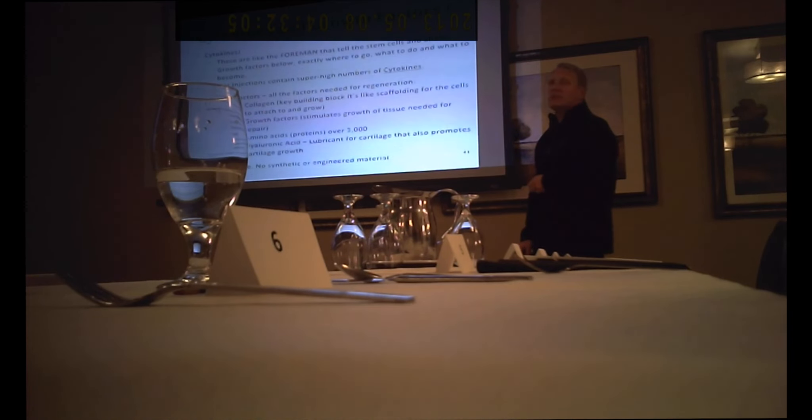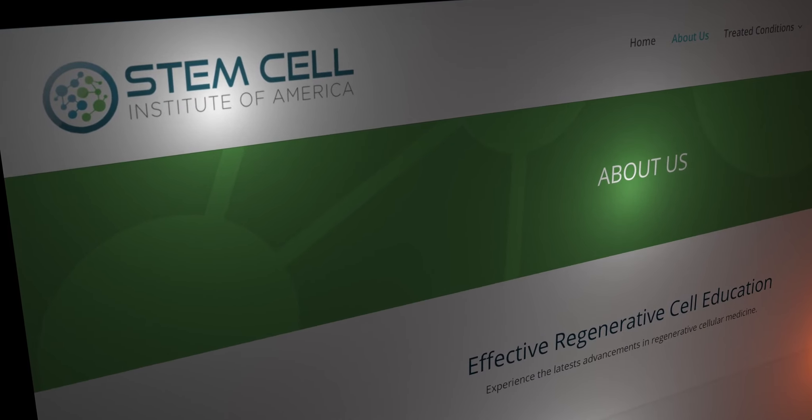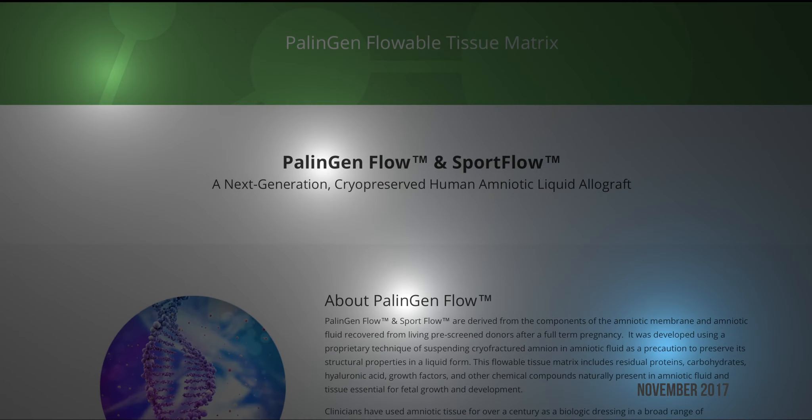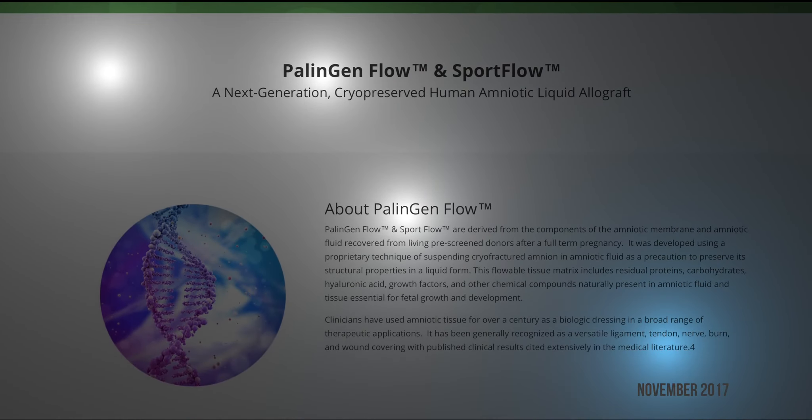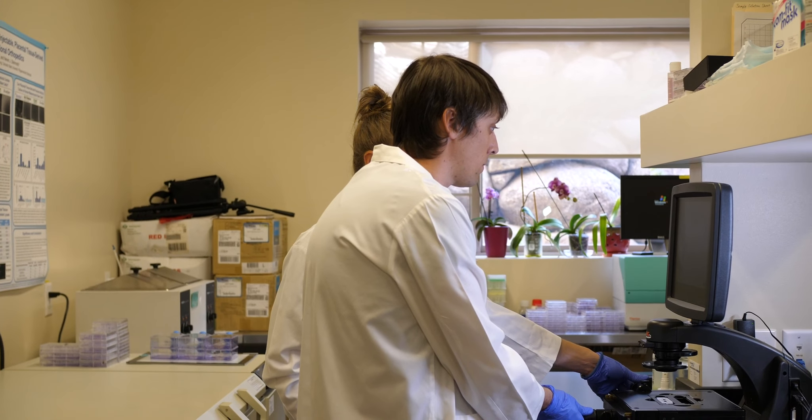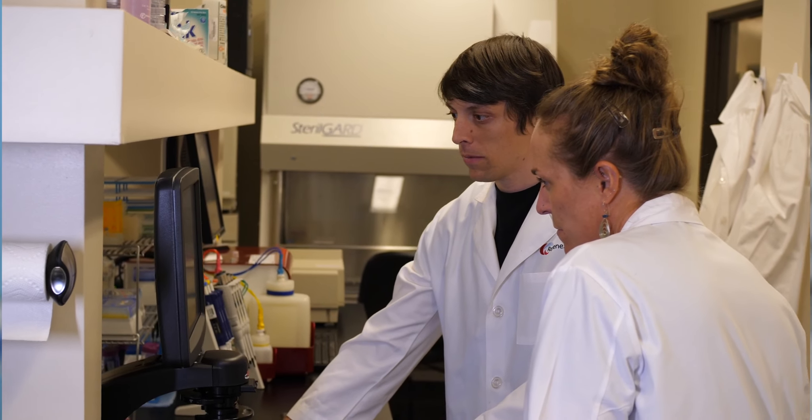What stem cell product does Stem Cell Institute of America claim it uses? On their website, the Stem Cell Institute of America states it uses Palingen Flow. We did find a scientific team who had worked with the Interventional Orthopedic Foundation who had actually tested Palingen Flow to see if it had living stem cells.